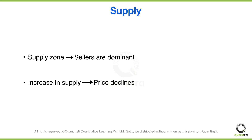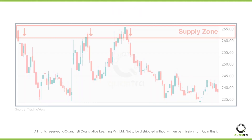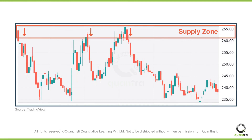Let's understand this with an example. Consider this price chart on screen. You can observe that whenever the price reaches between $260 to $265, it reverses and starts declining. This is because the sellers in this price zone are greater than the buyers, which indicates that the supply is greater than the demand. This is known as a supply zone.